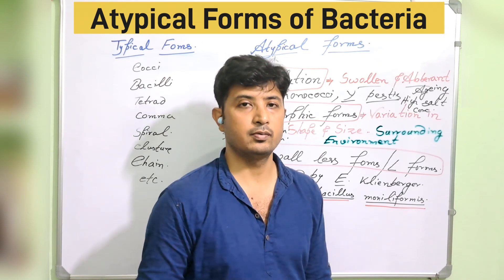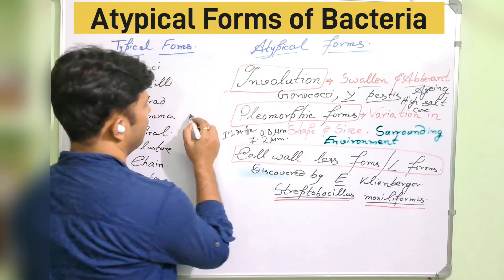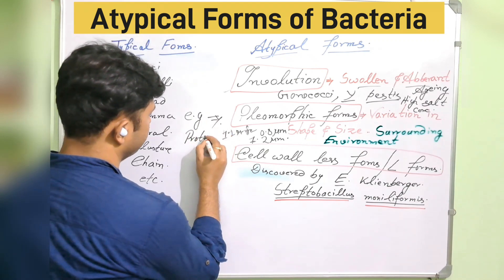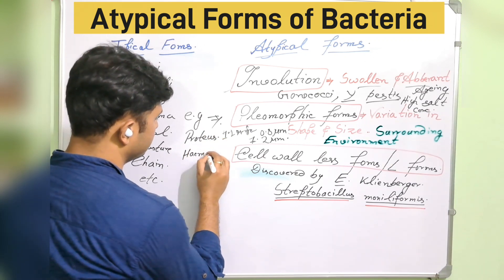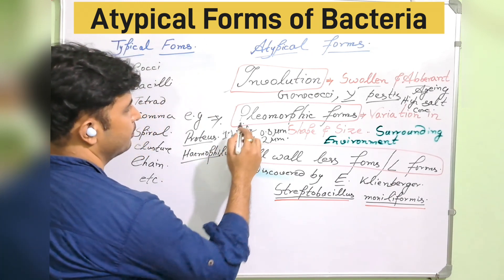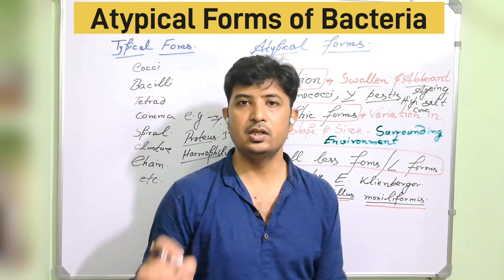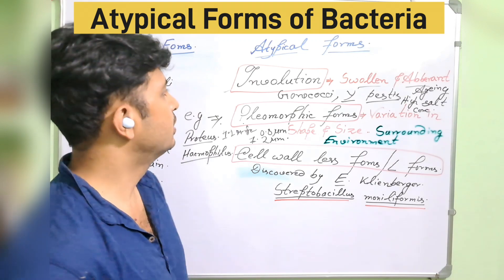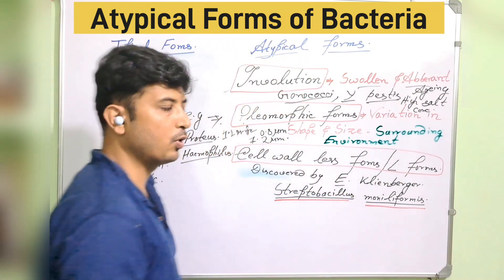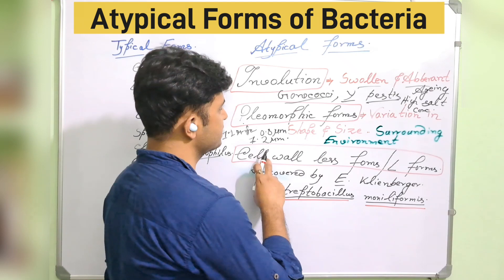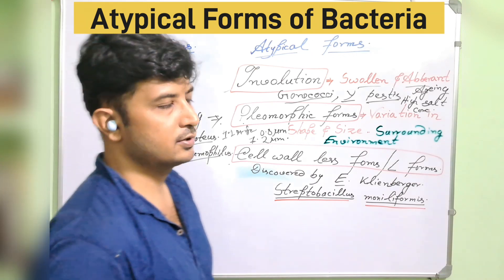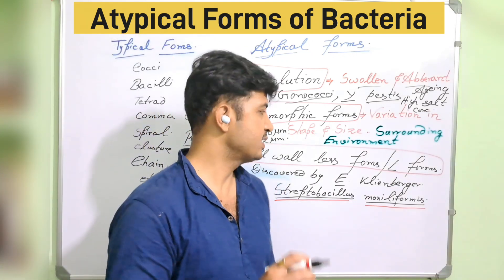These variations in pleomorphic bacteria are very rapid and change at frequent time intervals — that is a very important point. Typical examples of pleomorphic forms are Proteus and H. pylori. For involution forms, the prominent examples are Gonococci and Yersinia pestis.